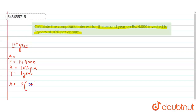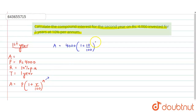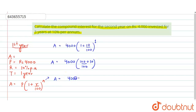Now we will calculate the amount. Amount equals P multiplied by (1 + R/100) to the power N. Putting the values: amount equals 4000 into (1 + 10/100) to the power 1. This gives 4000 into 110/100. Cancelling the zeros, the amount at the end of the first year is rupees 4400.